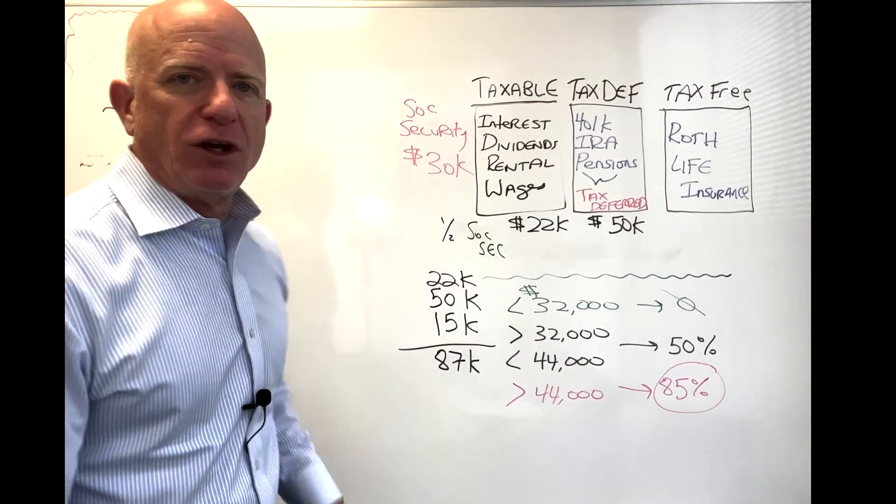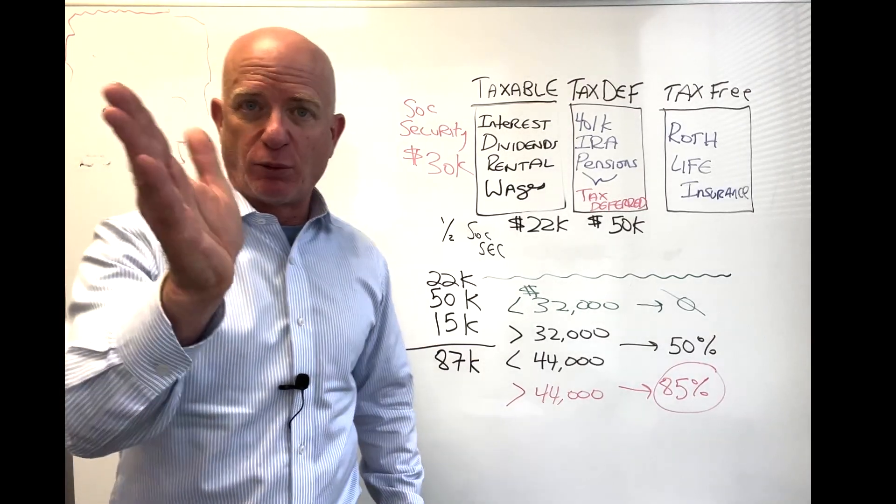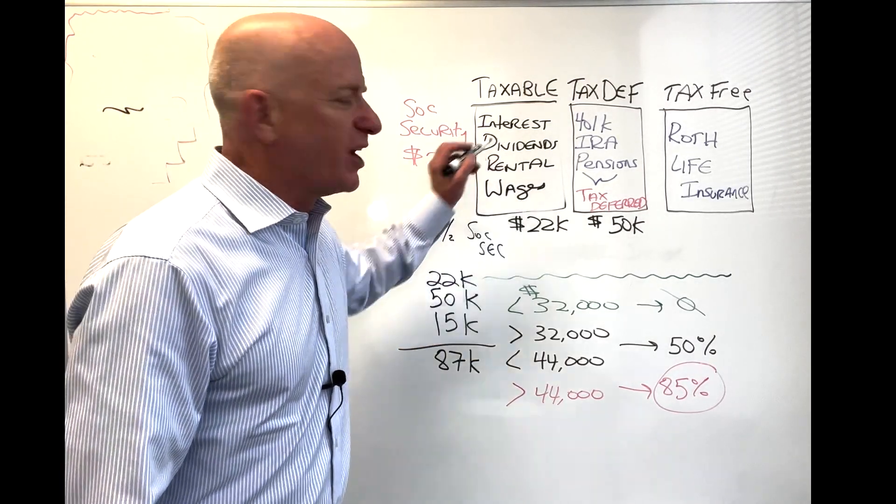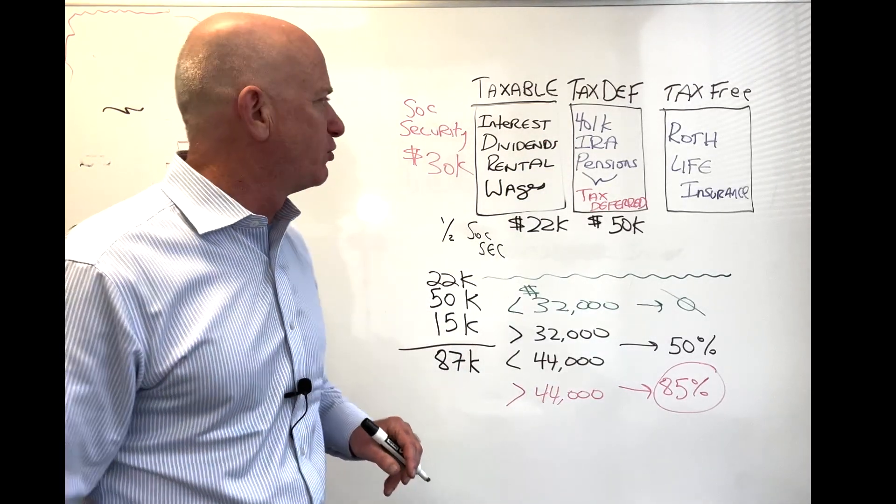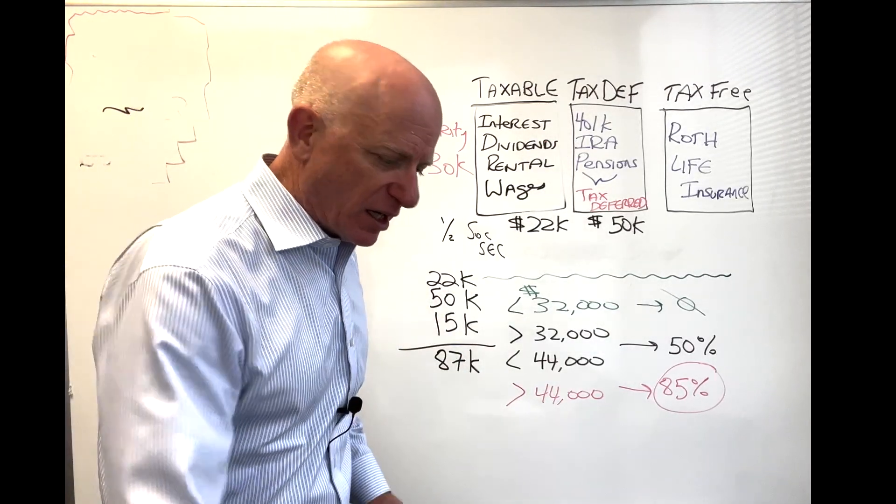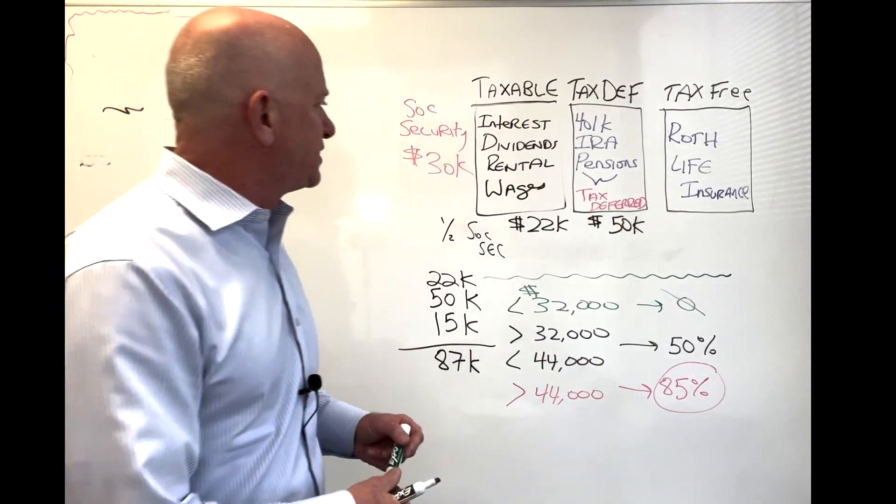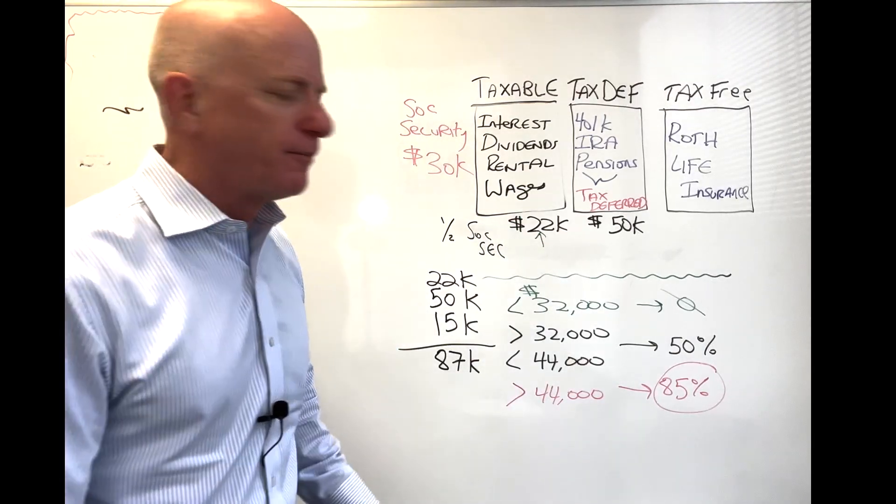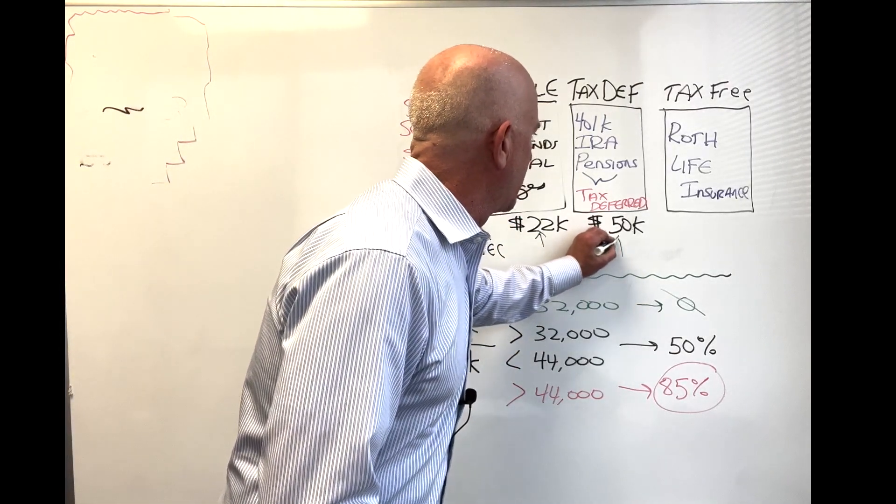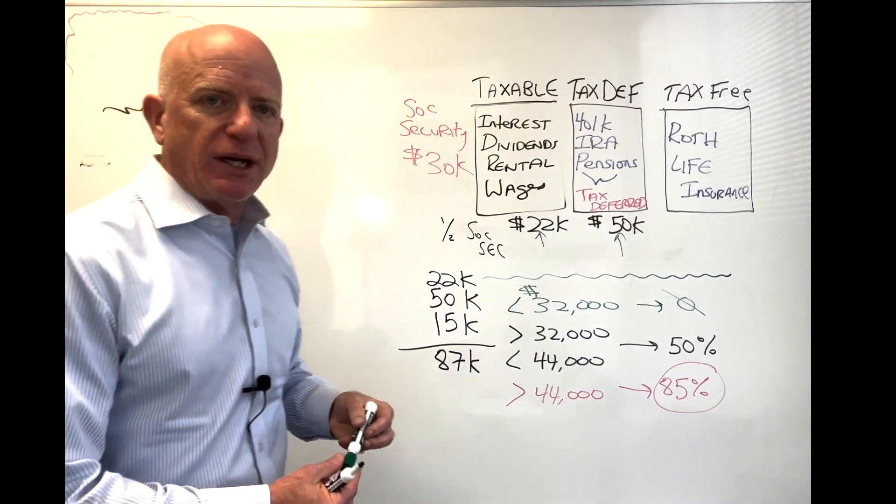Okay, so I cleared the board up a little bit so we have a little bit of space. Let's put some numbers behind the concept. Again, anything from taxable, anything from tax-deferred, plus one half of your Social Security. Here's some numbers. Let's say we had $22,000 that came out of this bucket in the year 2021. Let's say we had $50,000 that came out of that bucket in the year 2021.